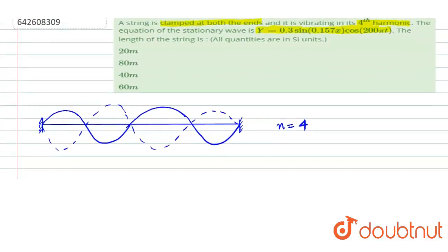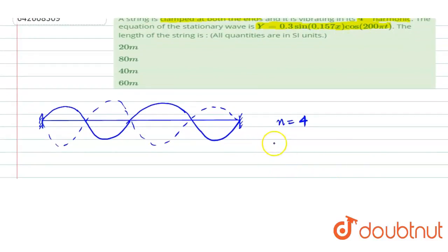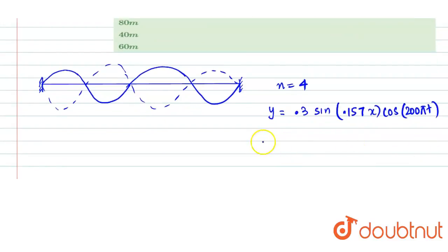Now, we are given with the equation of the standing wave which is y = 0.3 sin(0.157x) cos(200πt). And then we can compare this equation with the standard equation of standing wave which is y = 2A sin(kx) cos(ωt).